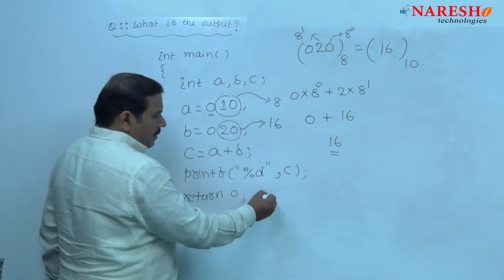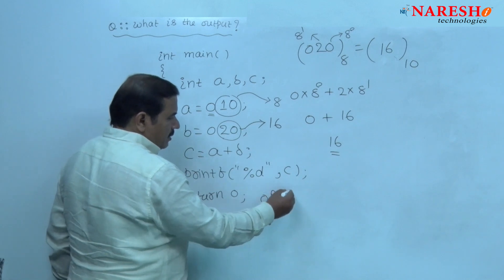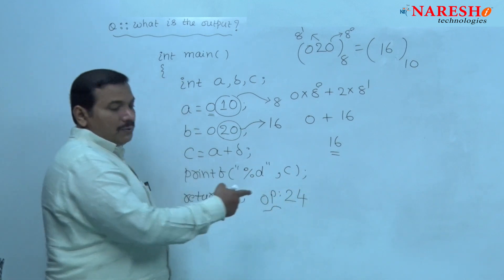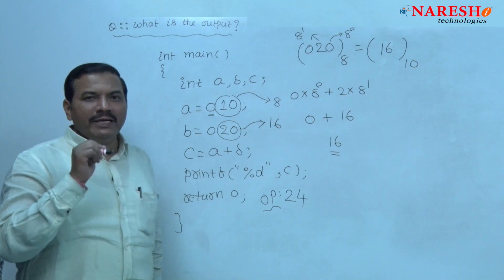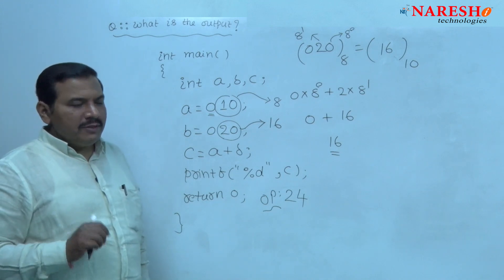The output of this code is 24. 24 is a decimal integer.